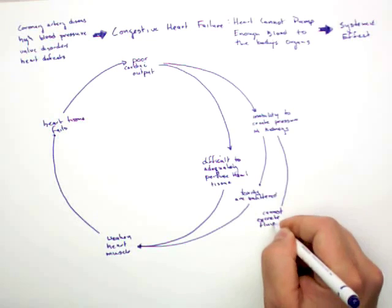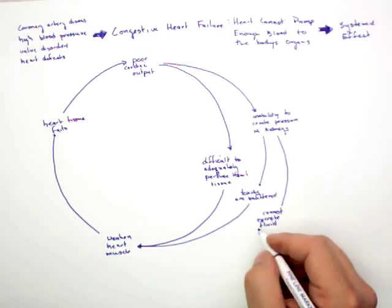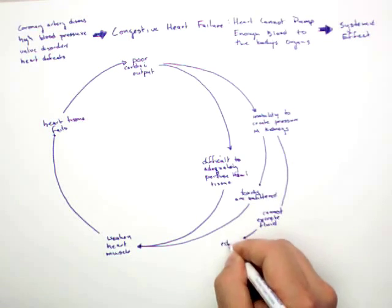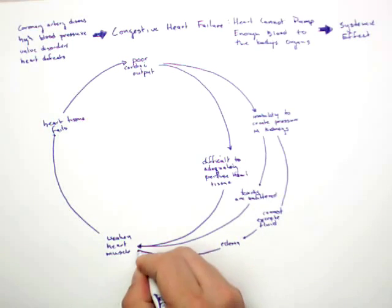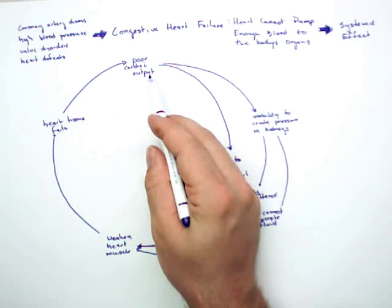It's going to be difficult to excrete fluid. The kidneys need some pressure behind the glomerular filtration membrane in order to push fluid out. If there's not enough blood pressure, you won't be able to push fluid through the kidneys and you won't make urine. That fluid's going to back up and cause edema. That edema is going to damage heart muscle, cause heart tissue to fail, and cause poor cardiac output.